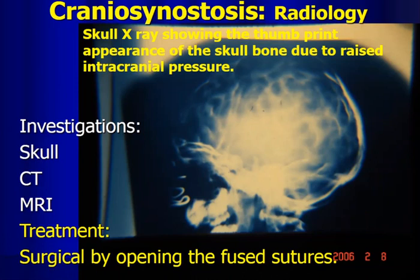Treatment of craniosynostosis is by surgical opening of the fused suture — we reopen the suture by cutting along its sides. The operation carries significant risk because of profuse bleeding from the bone, requiring blood transfusion. In infants, large volume blood transfusion can cause further complications. This is a high-risk surgery and the baby may not survive if not well prepared.